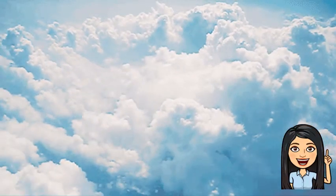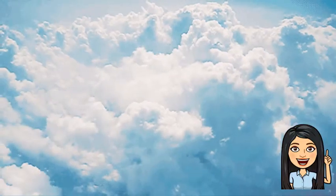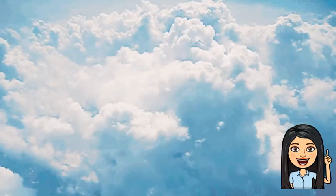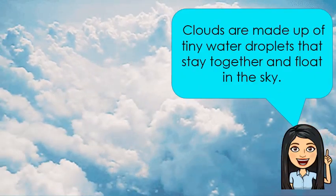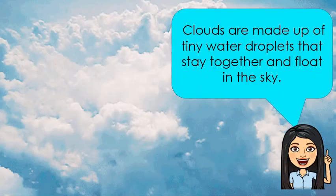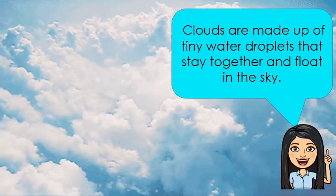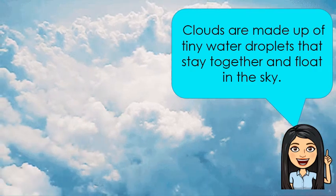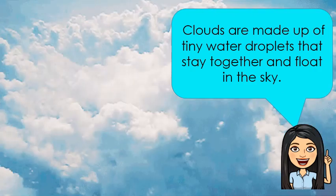What can you see in the sky during a clear sunny day? Can you see white cottony objects floating in the sky? They are clouds. Clouds are made up of tiny water droplets that stay together and float in the sky. They have different shapes and sizes. Clouds help people identify the weather for the day.